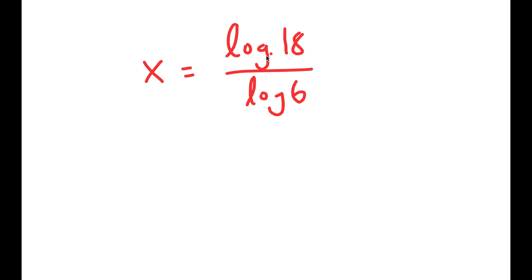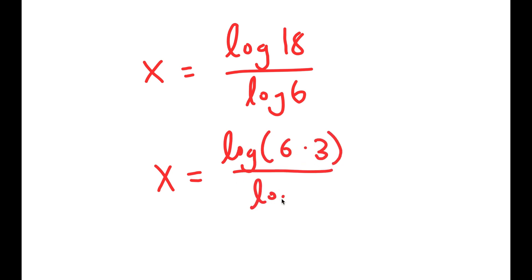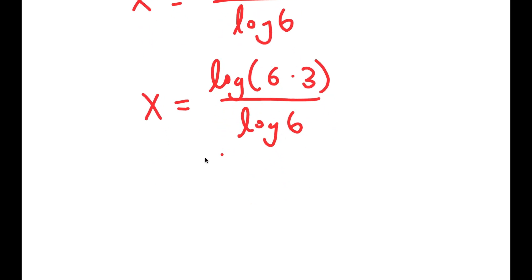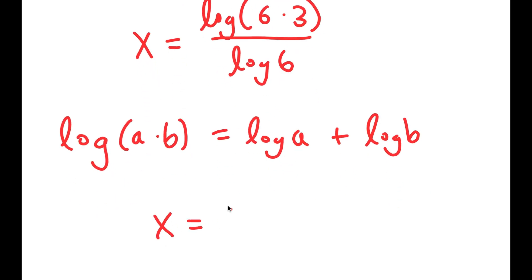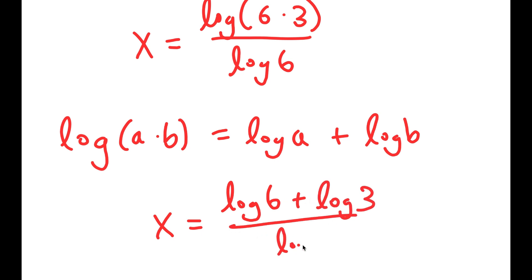To simplify this, I'm going to rewrite log of 18 as log of 6 times 3. I'm doing this so I can use the formula log of a times b is equal to log a plus log b. So log of 6 times 3 is equal to log 6 plus log 3, and I have this over log 6.